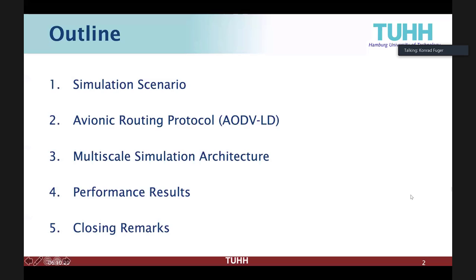For the outline, first I will talk about the simulation scenario for the avionic routing to give a motivation for why we are doing all these things. Then I will make a very short introduction of the routing protocol we are proposing and why we need a new routing protocol for this scenario. Then I will go into the main part, which is the architecture of our multi-scale simulation approach, and close with performance results and remarks on when to use a multi-scale simulation and when it's probably not a good idea.